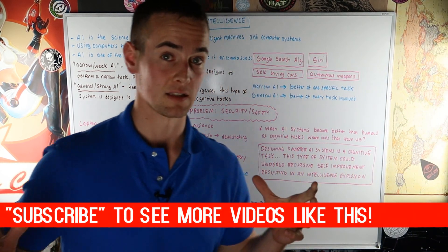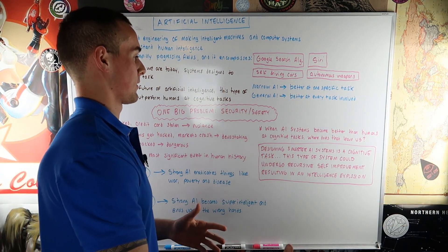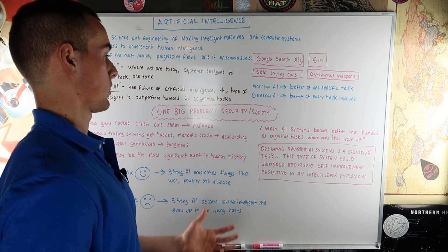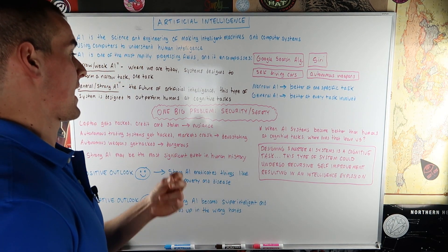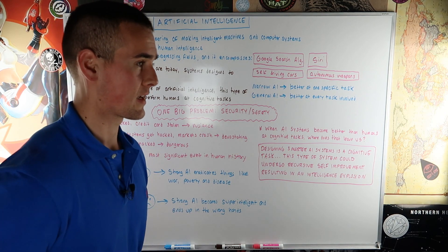Now here's where things kind of get like, it kind of blows your mind a little bit. And hopefully this isn't just way too extreme a view. But I just wanted to bring it in here as a curiosity point. When artificial intelligence systems become better than humans at cognitive tasks, where exactly does that leave us? It's kind of what I said here, guys.